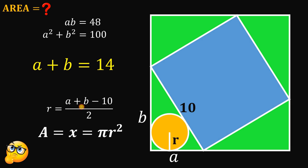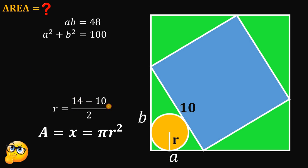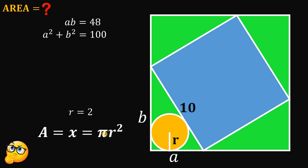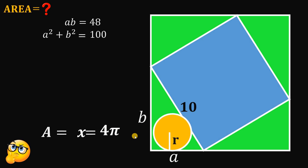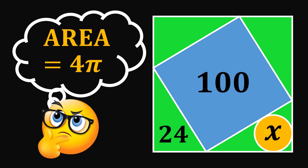So we can replace A plus B with 14 in our radius formula. Then 14 minus 10 gives us 4, and 4 divided by 2 gives us 2 — that is the length of the radius of the circle. So the area of the circle equals pi times 2 squared, which is 4 pi. Therefore, the area of this circle represented as x must be equal to 4 pi square units.